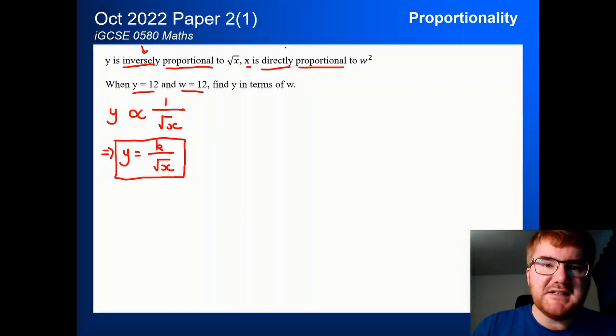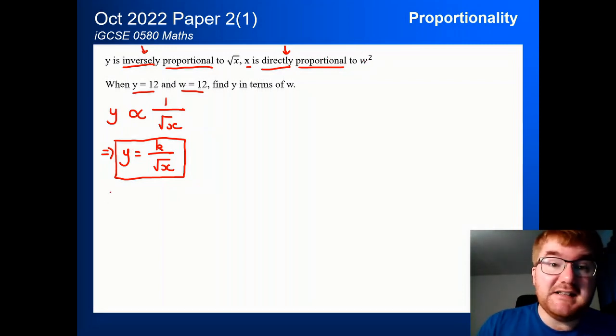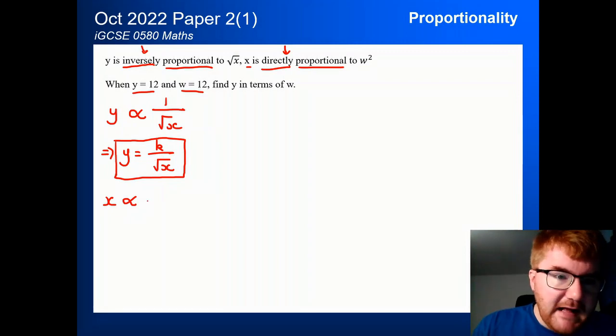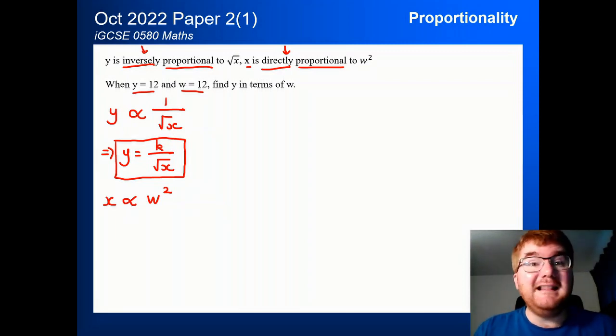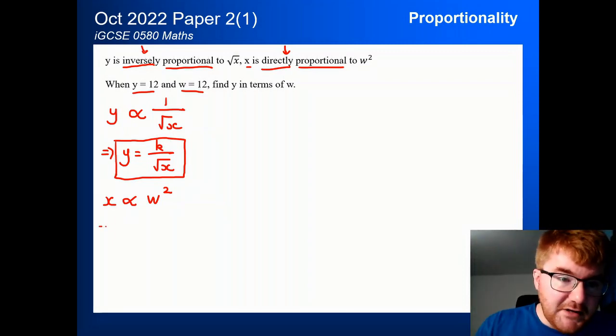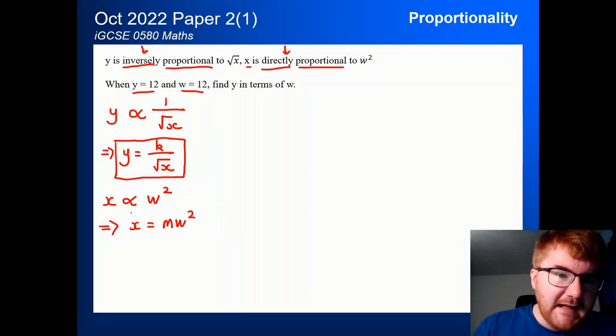Now we're going to look at the second part here. So x is directly proportional to w squared. So how do we write that as a proportionality statement? Well, x, don't forget our fish symbol, is directly proportional. So no fraction here. And then w squared. Now to make sure we don't confuse the two constants, I'm going to use a different letter for the constant here. So we can then write this as x is equal to some constant mw squared. And that's going to be our second equation.